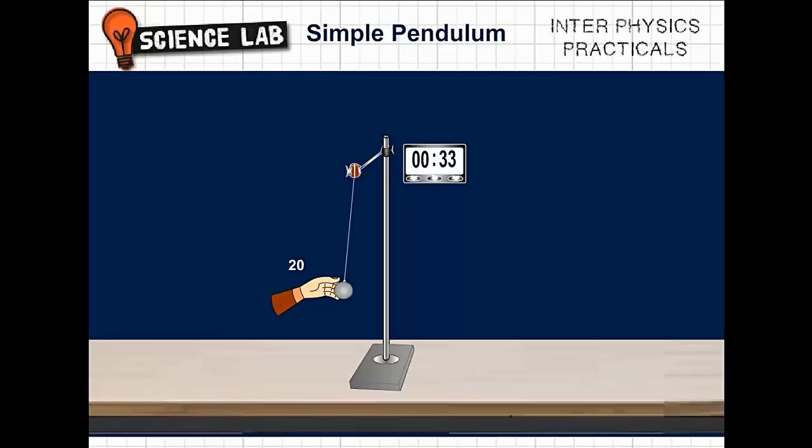Note the time period T1 for trial 1 and repeat the process for trial 2. Reset the stopwatch. Drag the bob aside by a small angle, say 5°, and release it. The bob will start oscillating.